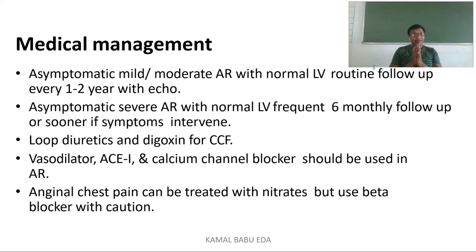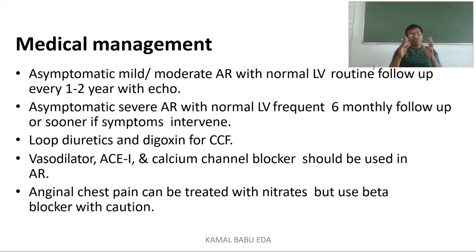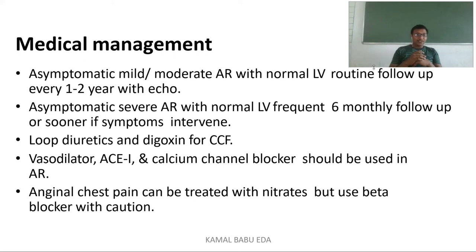For medical management: asymptomatic patients with mild or moderate aortic regurgitation and normal left ventricle require routine echocardiogram follow-up every one to two years. Severe aortic regurgitation with normal left ventricle requires follow-up every six months. Medications include loop diuretics and digoxin to prevent congestive cardiac failure, vasodilators such as ACE inhibitors and calcium channel blockers, and nitrates for anginal chest pain. Beta blockers should be used with caution.